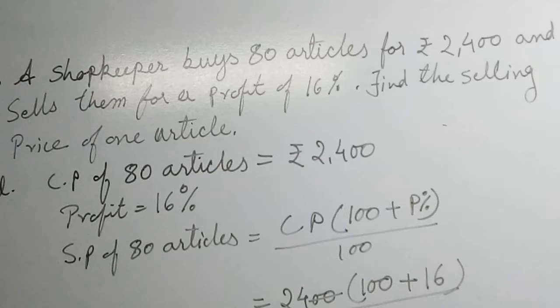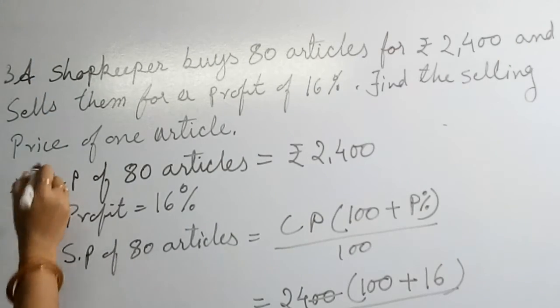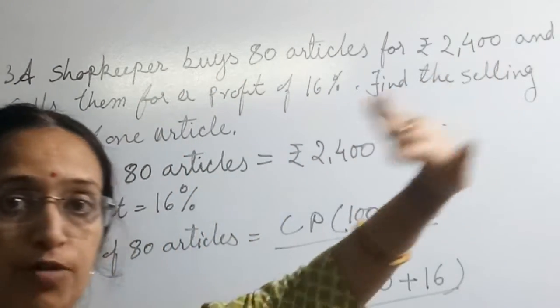Student, in this third question, they are telling a shopkeeper buys 80 articles. This is the third question - they are telling us a shopkeeper buys 80 articles for rupees 2400.